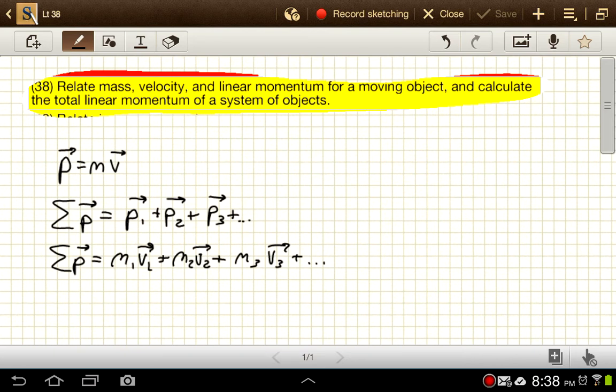So if we wanted to find the total momentum of multiple objects, we could just add those together. But keep in mind that momentum is a vector, so we have to do vector addition. And then we can further expand this to total momentum equal to mass 1 times velocity 1 plus mass 2 times velocity 2 and so on like that.